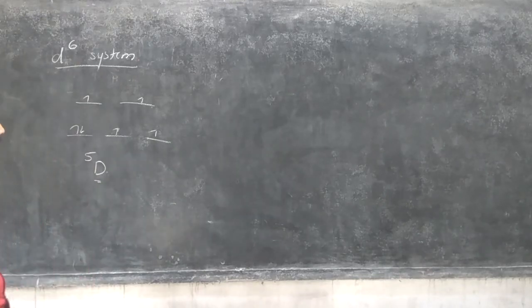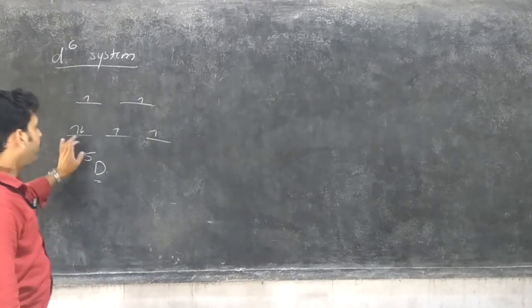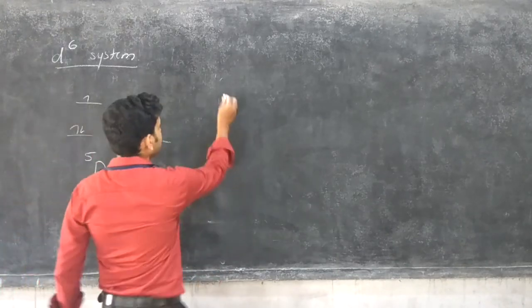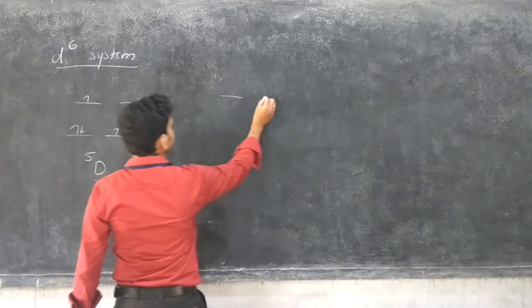In the D6 system, it again differentiates the high spin and low spin complexes. In high spin cases, with electrons 1 through 6, the spin S=2, so 2×2+1=5, giving spin multiplicity 5. The L value calculation gives: 2, 4, 5, 4, 2, so S=0,1,2,3 giving S, P, D — therefore the term is 5D.